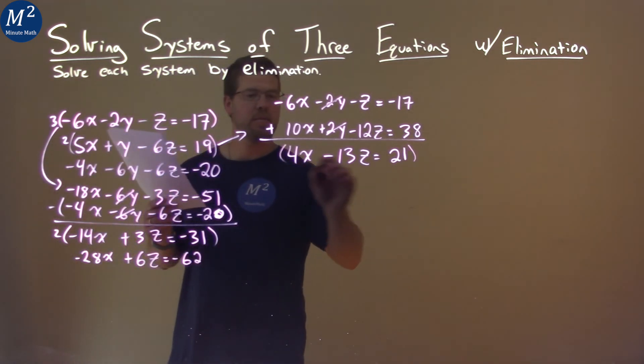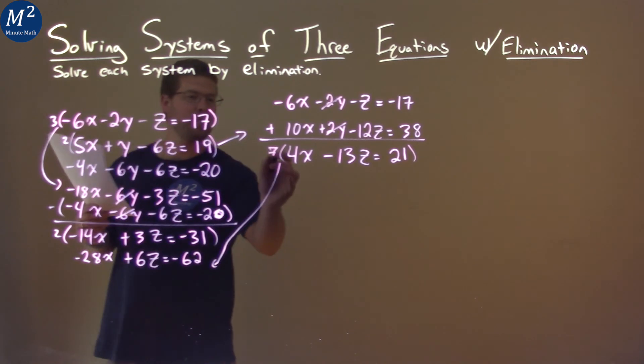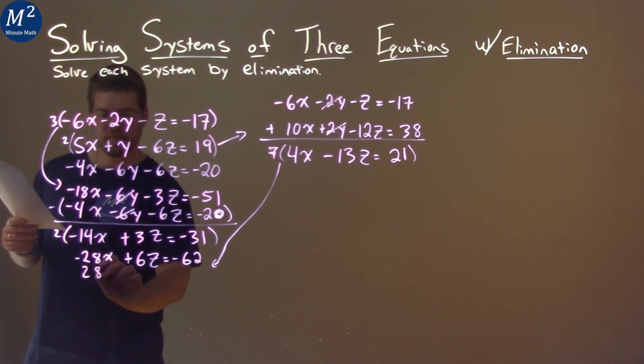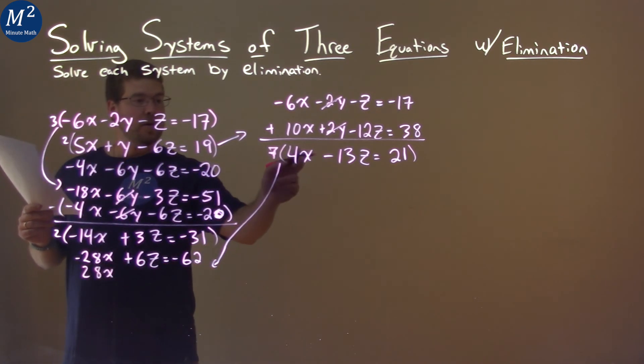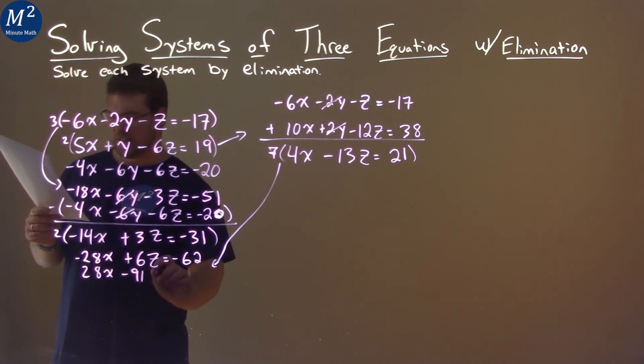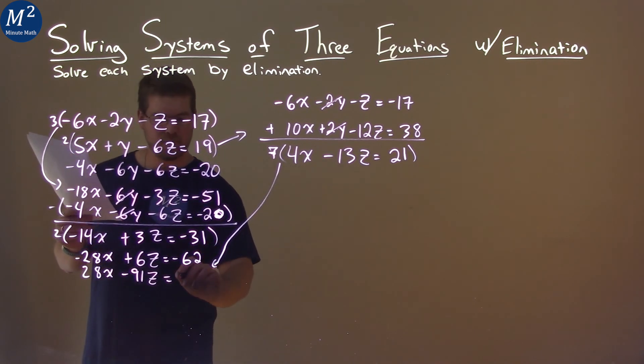This one here, I'm going to multiply it by 7 and put it down here. Multiply the whole thing by 7. 4 times 7 is 28x. 7 times 13 is 91, so we have negative 91z here. And that's equal to 7 times 21, which is 147.